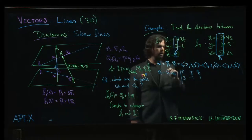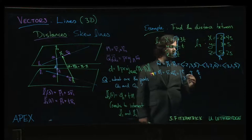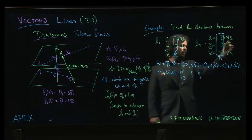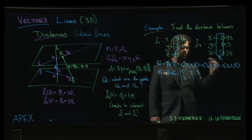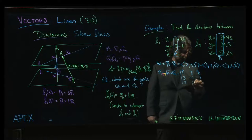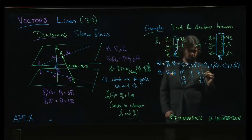And then for v2, we look at the coefficients of s: 4, 1, 2. And we are going to work out that cross product.